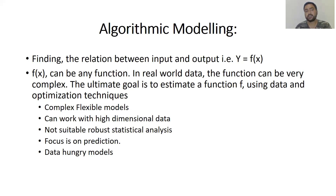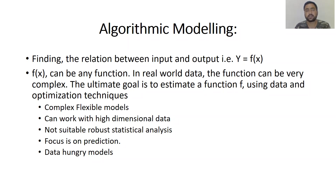The main focus of algorithmic modeling is on prediction. It works with a large volume of data, which makes it highly effective for the problem at hand. These are data-hungry models, meaning they require a huge amount of data — the larger the dataset, the more precise the results generated.